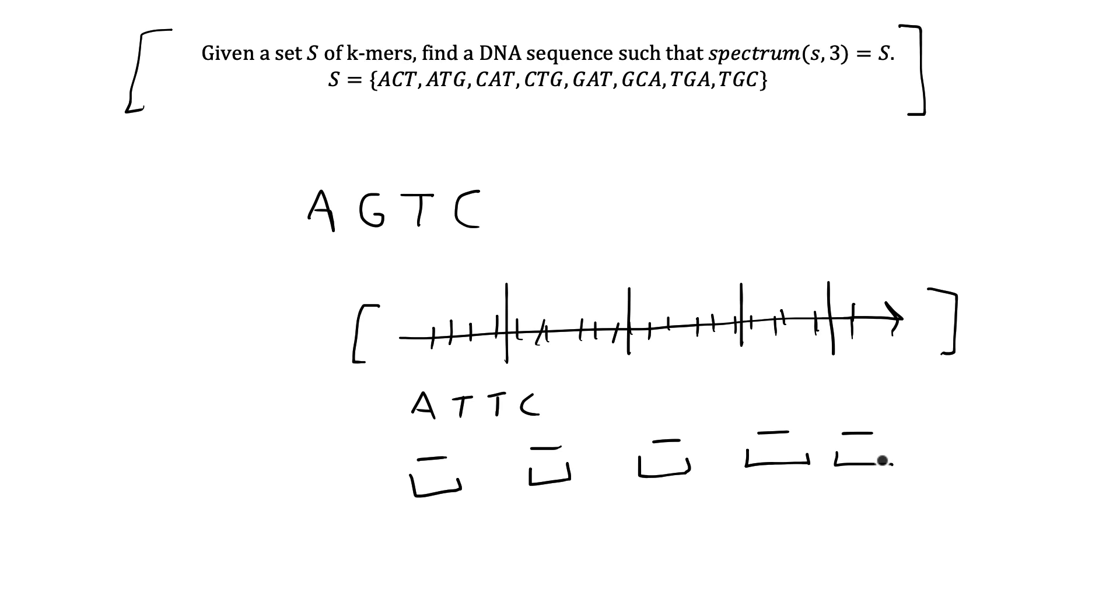The problem then for bioinformaticians becomes how do people take these fragments of which the sequences are known and arrange them again in the correct order so that the first fragment corresponds to the first position, the second fragment in the second position, and so on and so forth to be able to recreate an entire DNA sequence. This problem is known as DNA fragment assembly and it has one possible solution using graph theory.